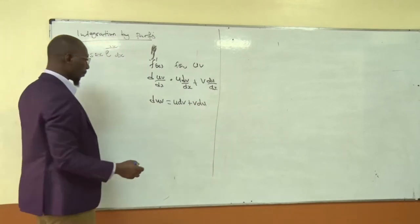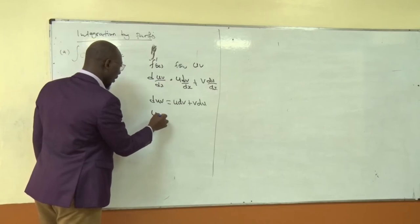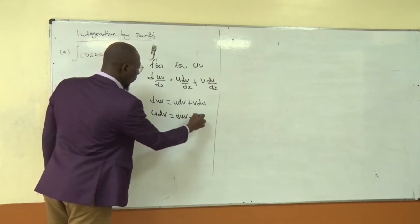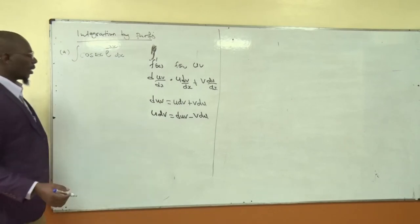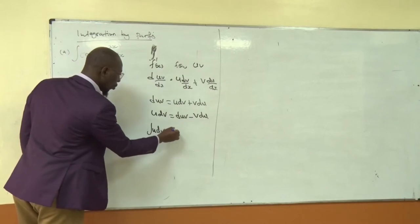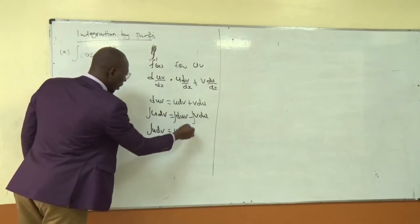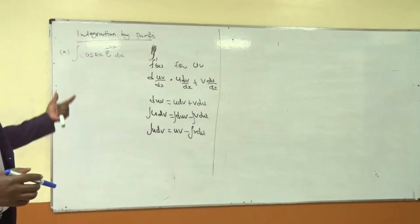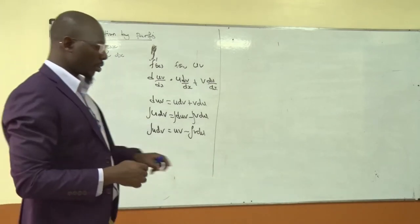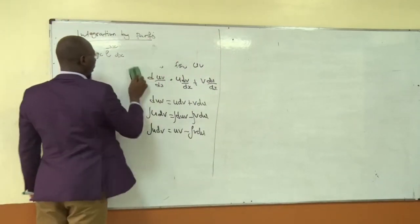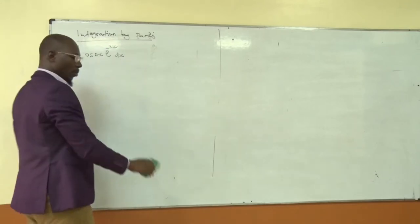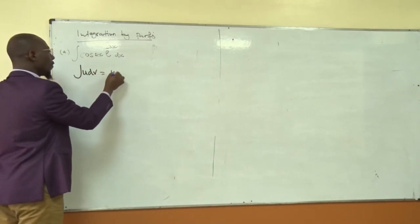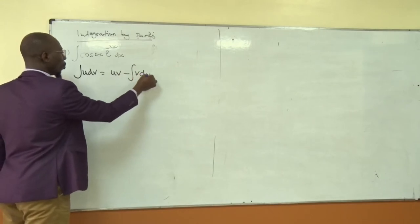We can make u·dv the subject and get that u·dv equals d(uv) minus v·du. Integrating both sides, the integral of u·dv equals uv minus the integral of v·du. This is our reference formula: ∫u·dv = uv − ∫v·du.